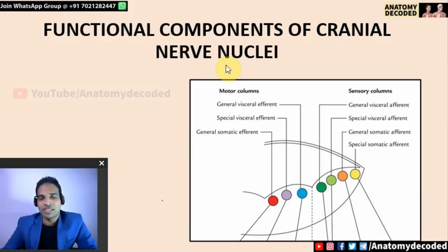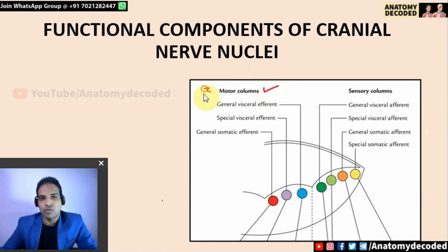Hello everyone. Welcome to this session on the functional components of cranial nerve nuclei. This is one of the topics which students find most difficult in neuroanatomy, so I have decided to take up this topic for you all. In this session we will be covering all the functional components. There are 3 motor columns and there are 4 sensory columns.